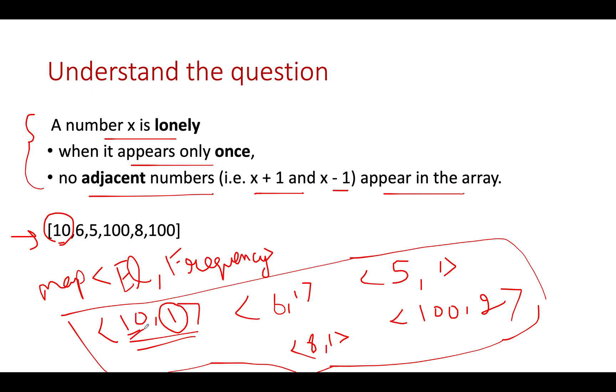I extract the current element, which is 10, and check whether 9 or 11 are present in the map. Neither is present, so I add 10 to the result because both conditions of a lonely number are satisfied.